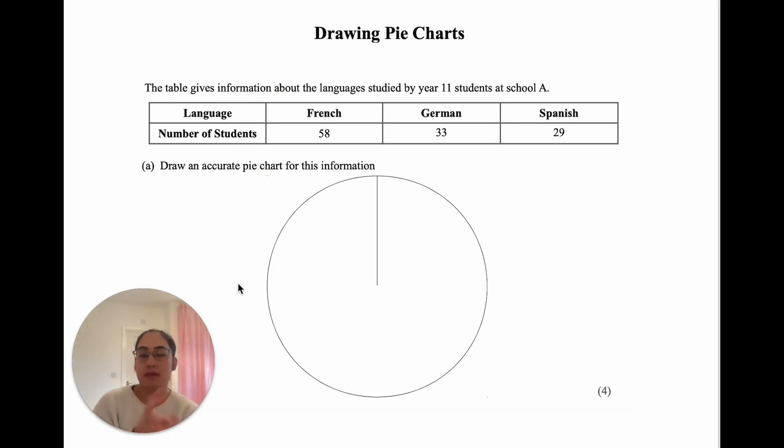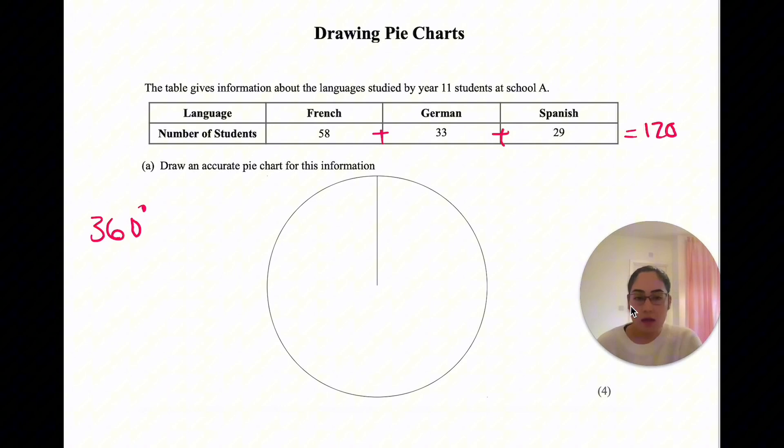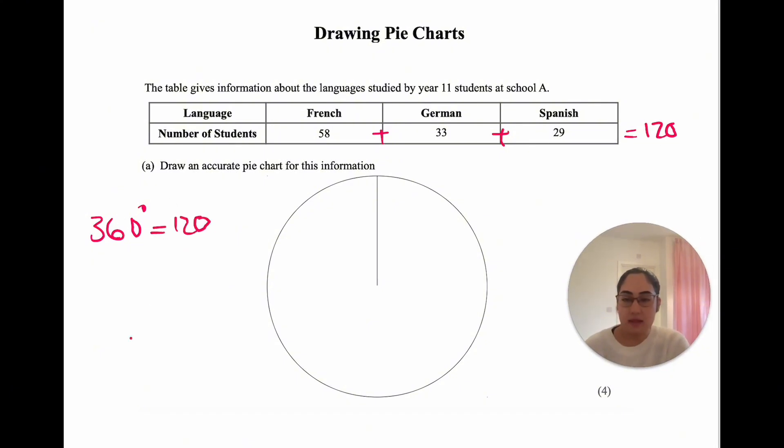We've got the numbers, but to draw a pie chart, we need to know the angles for each category. Here's how we do it. Remember, a full circle has an angle of 360 degrees. We need to look at what number this 360 represents. If we add 58 to 33 to 29, we get 120. So 360 degrees represents 120 students, and we need to find out the angles for each category.